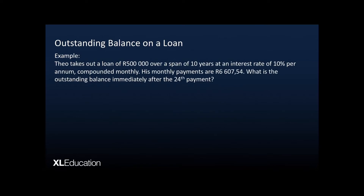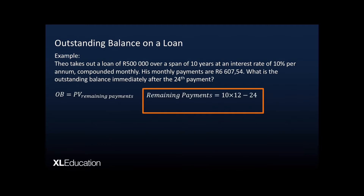For example, Theo takes out a loan of 500,000 rand over a span of 10 years at an interest rate of 10% per annum compounded monthly. His monthly payments are 6,607 rand and 54 cents. What is the outstanding balance immediately after the 24th payment? The outstanding balance is simply the present value of the remaining payments. The remaining payments are 10 times 12 total minus the 24 already made, so there are 96 payments remaining.